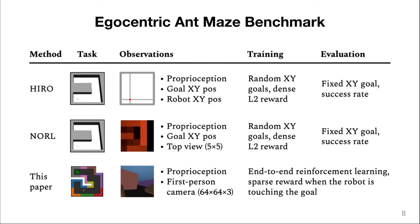To evaluate Director, we choose an ant maze environment. However, prior work makes several assumptions that we overcome here. For example, giving the global xy position to the agent or providing a training distribution of goals and even dense Euclidean rewards.